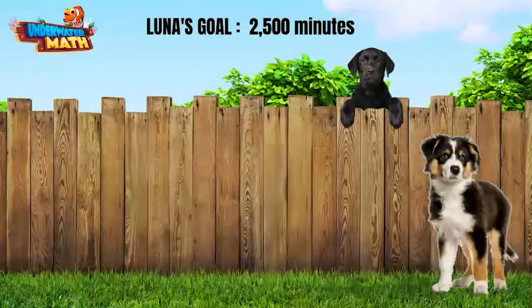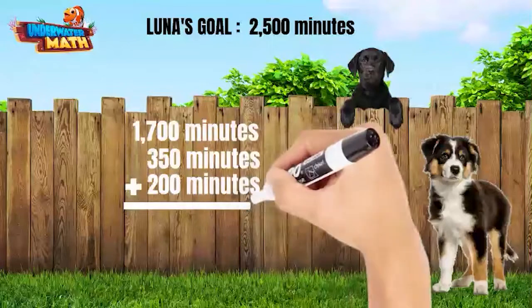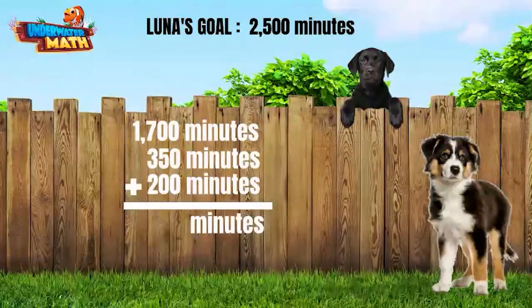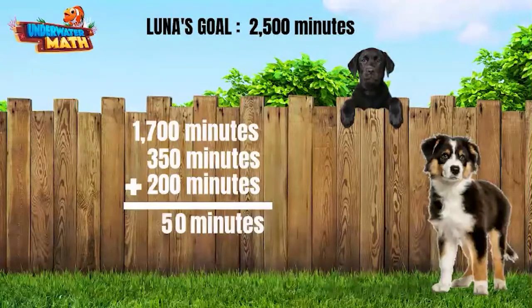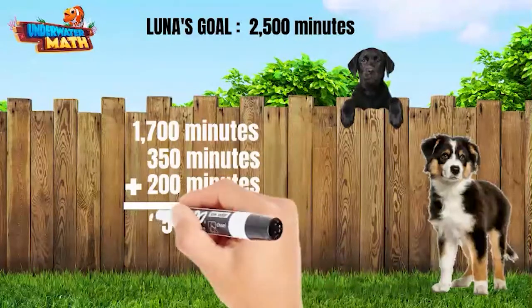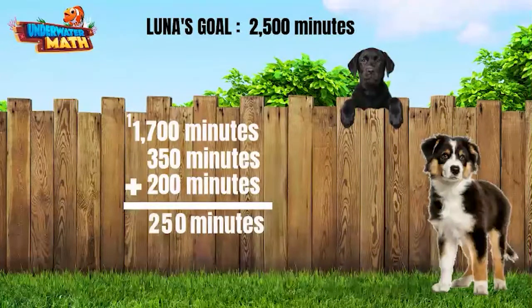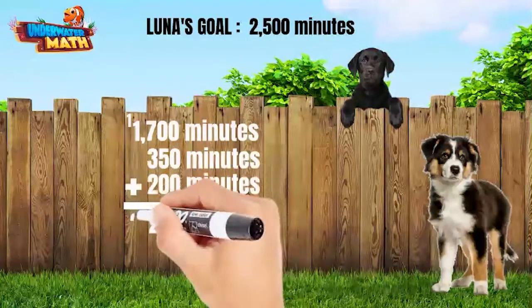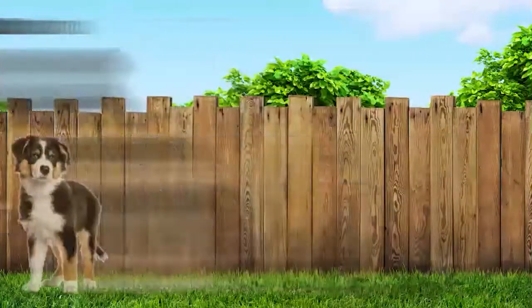We need to know how many minutes Luna has run so far by adding the three numbers together. We will start from the ones place and work our way over. Zero plus zero plus zero equals zero. Zero plus five plus zero equals five. Seven plus three plus two equals twelve — the two goes at the bottom and we carry the one over to the next place value. One plus one equals two. Luna has run 2250 minutes so far.